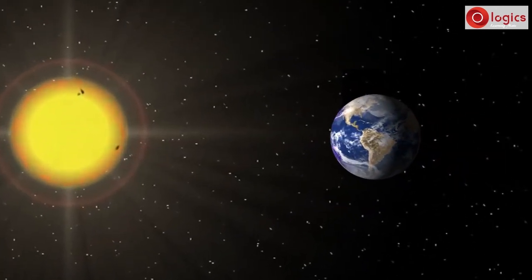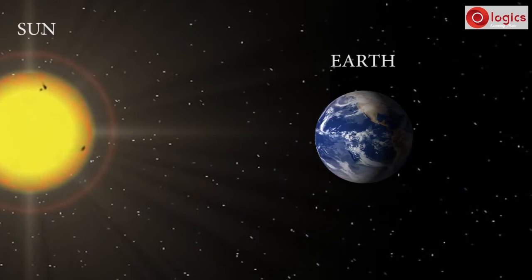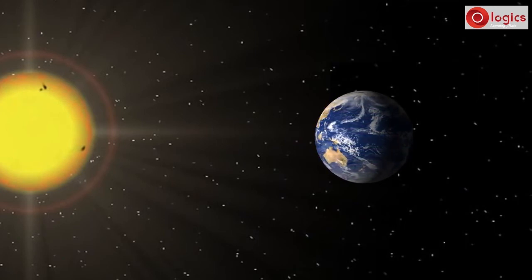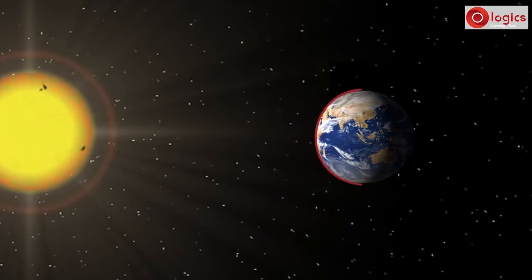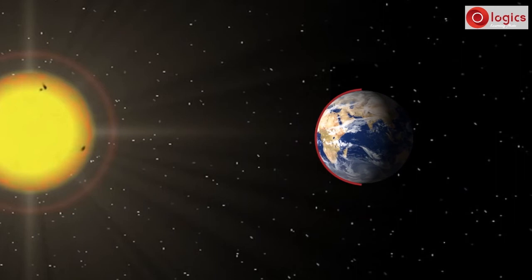Let us see, this is the sun and this is the earth. Earth rotates on its axis. This is the region of earth that has sunlight at this point of time.